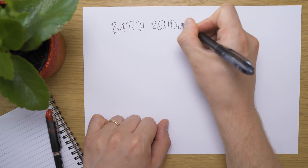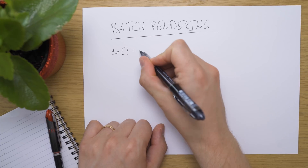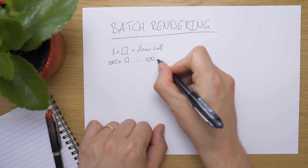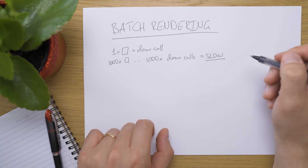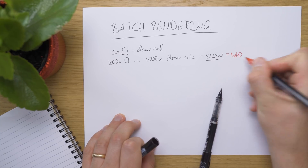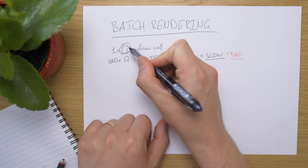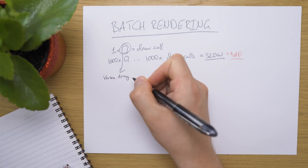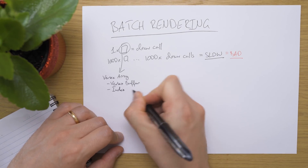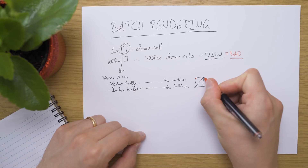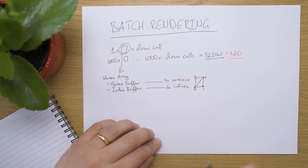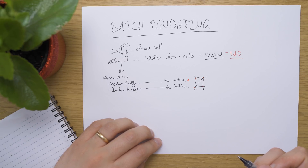So now that we know just how useful batch rendering is, how does it actually work? Up until now, one quad has always resulted in one draw call, which is an issue because if we had a thousand of these, we'd get a thousand draw calls, which would be slow. Let's break down how we would typically render a single quad. In OpenGL, we would use something called a vertex array, which contains a vertex buffer and index buffer. Inside that we would have four vertices and six indices, which makes up one quad. The indices of each triangle being zero, one, two, and then two, three, zero. That's our typical setup for rendering a single quad.